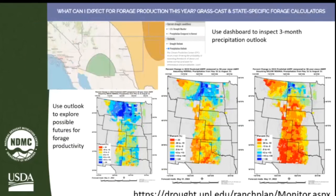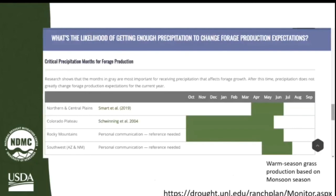For some ranchers, they do want to use the three-month outlook and have some sense of looking into the future. That's where GrassCast and some other great tools come in to help ranchers get a sense that, looking at the data, they should probably start making some decisions — it's not looking great no matter what. We're also trying to think about timing: knowing which are the months you really need precipitation, and therefore when to monitor and make decisions, for different regions — though it's harder to nail down for some regions than others.